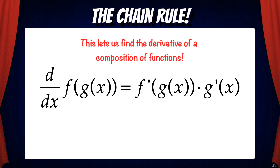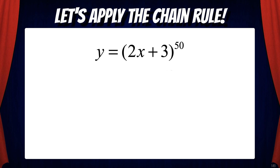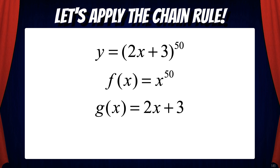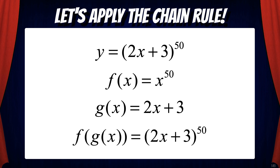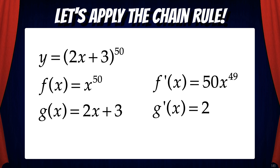This lets us find the derivative of a composition of functions. Let's apply this to the previous example: y equals the quantity of 2x plus 3 to the 50th power. We first dissect this function into its components. The outer function f(x) equals x to the 50th, and the inner function g(x) equals 2x plus 3. So f(g(x)) equals 2x plus 3 to the 50th power. Now let's take the derivative of f(x) and g(x): f'(x) equals 50x to the 49th power and g'(x) equals 2.